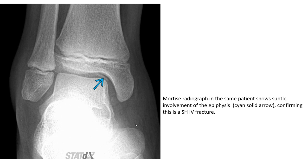This is Type 4 of the Salter-Harris fracture, where the fracture line goes through the epiphysis, physis, and metaphysis.